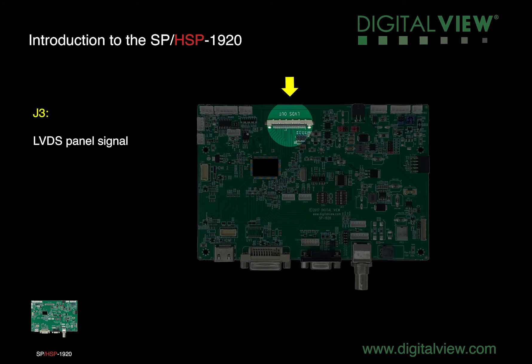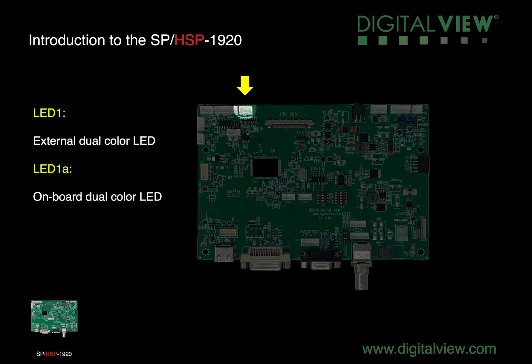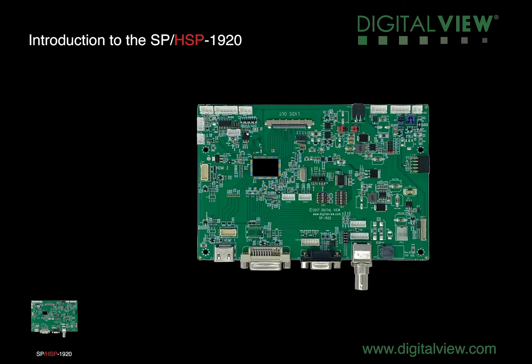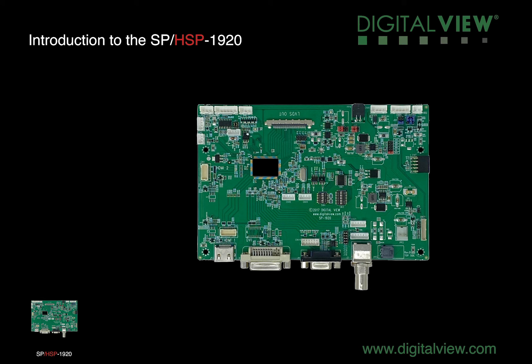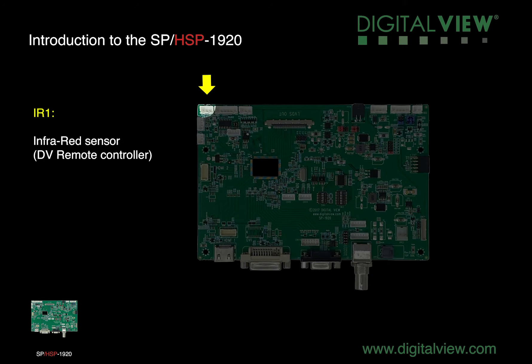J3 is the LVDS panel interface. LED1 is for the external and onboard dual-color LED. CN8 is for the connection for serial control or sending RS-232 commands.